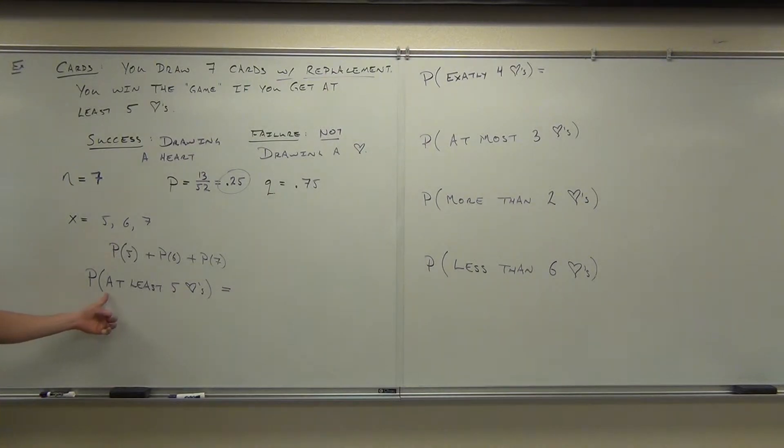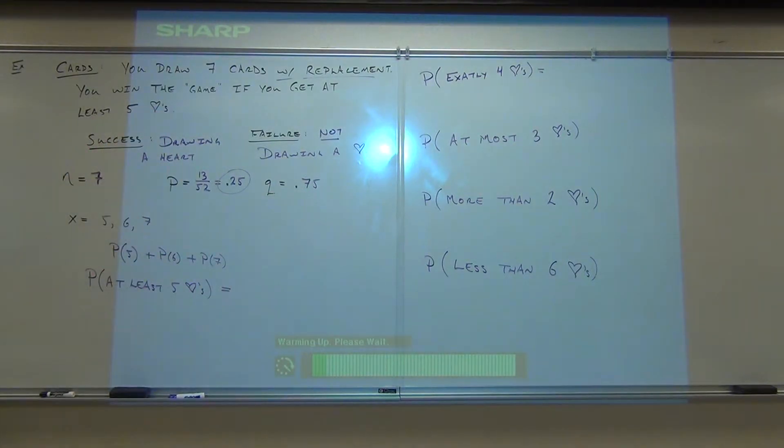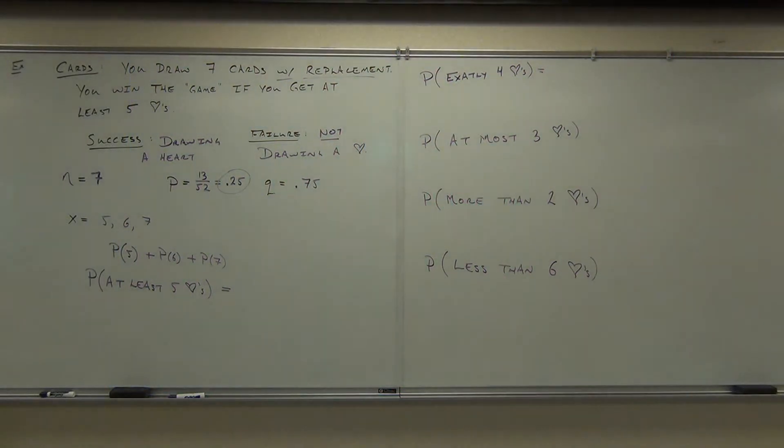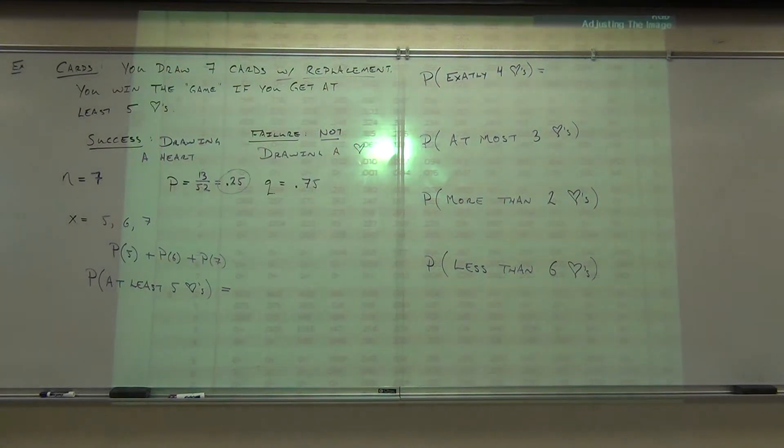So, let's look at the probability of finding at least five hearts. You have to memorize those, by the way, or have these written down, because we're going to do this on the board, well, the white screen. Actually, can you see it when it comes up? Probably not. Okay. You can see it when it comes up.